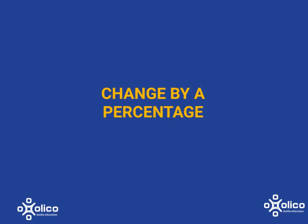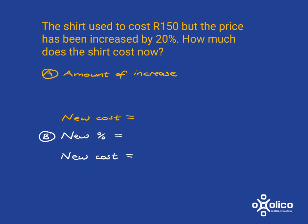We're going to look at situations where things either increase or decrease by a percentage. Consider this scenario: if we have a shirt that costs 150 and the price is increased by 20%, we want to know how much the shirt costs now. We've got two ways of doing it, and I'm going to show you these two ways and you can decide which you prefer.